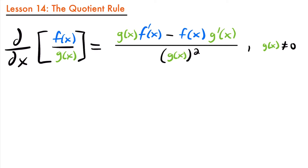Here is our quotient rule. If we have a function f of x divided by another function g of x, the derivative of their quotient is going to be equal to the function in the denominator times the derivative of the numerator function, minus the numerator function times the derivative of the denominator function, all over the denominator squared. That is provided that the denominator is not zero.